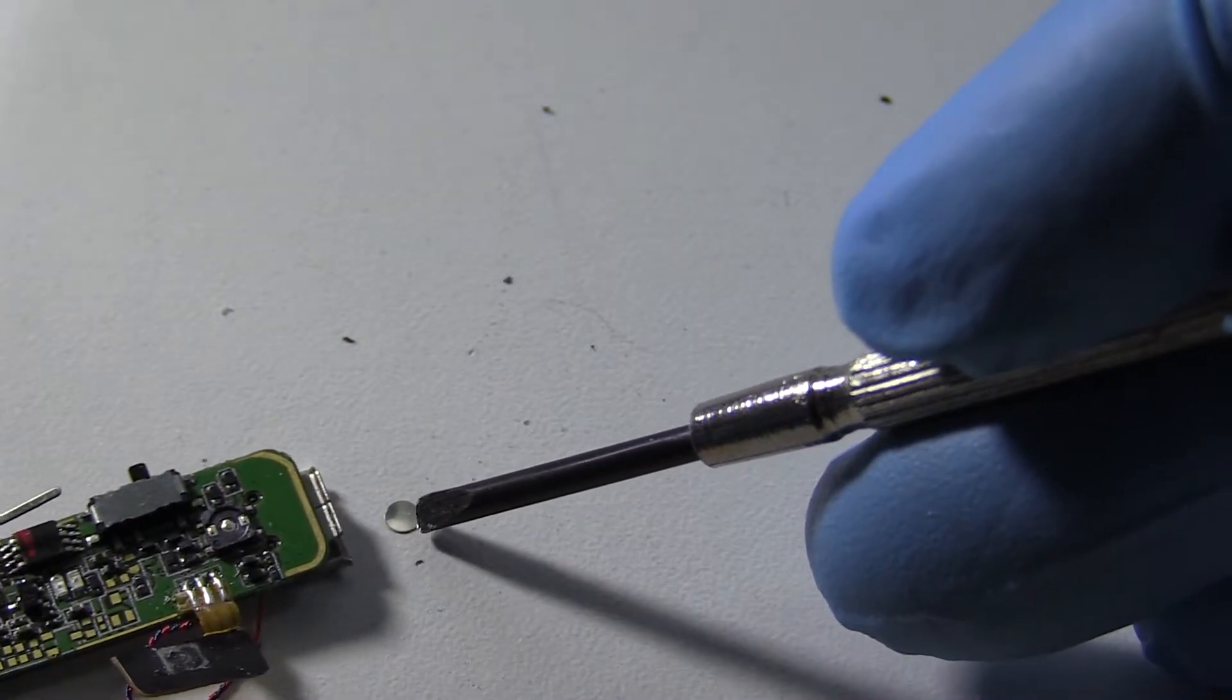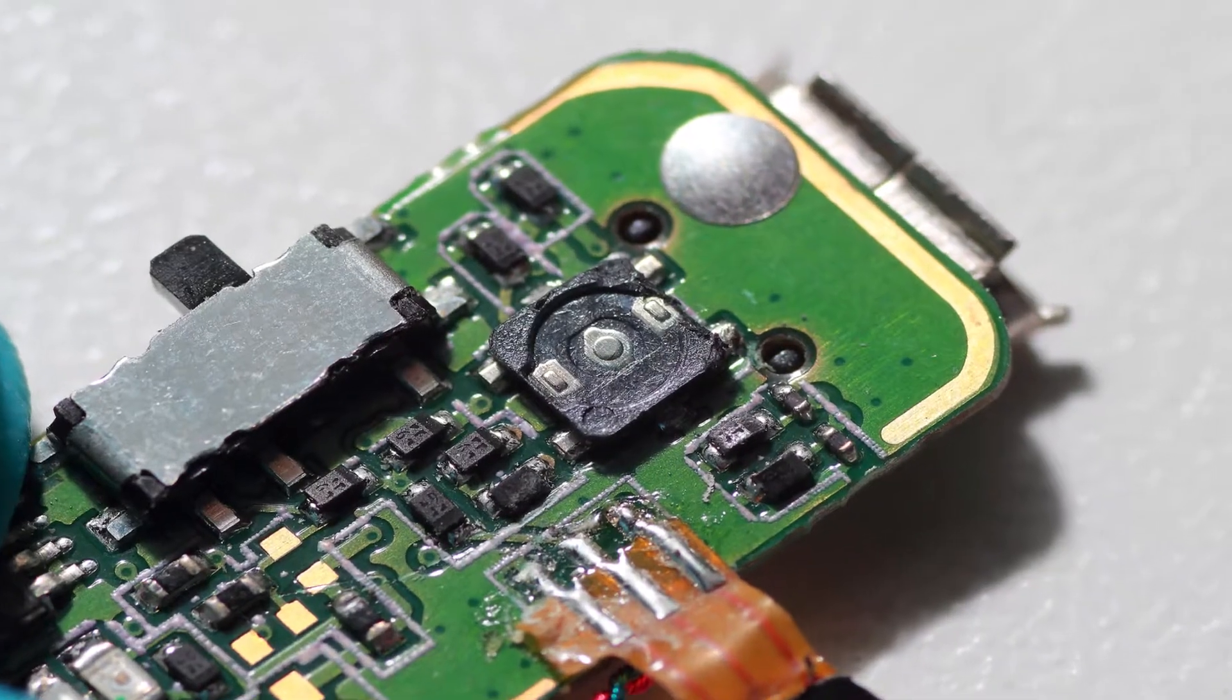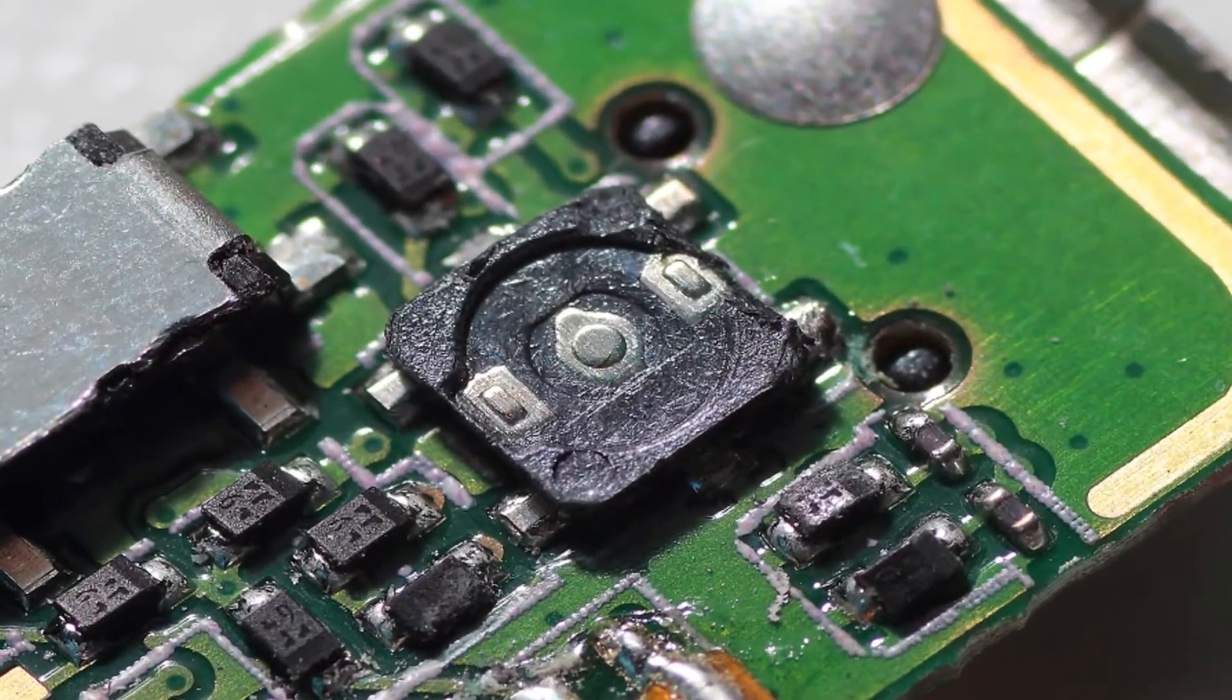These little buttons are typically stainless steel, but the tiny little points inside the switch are going to be silver.